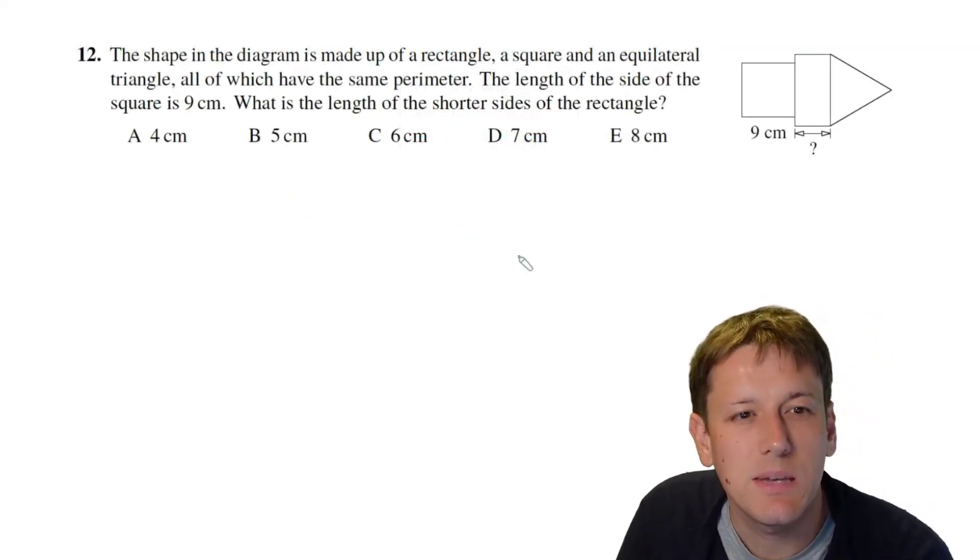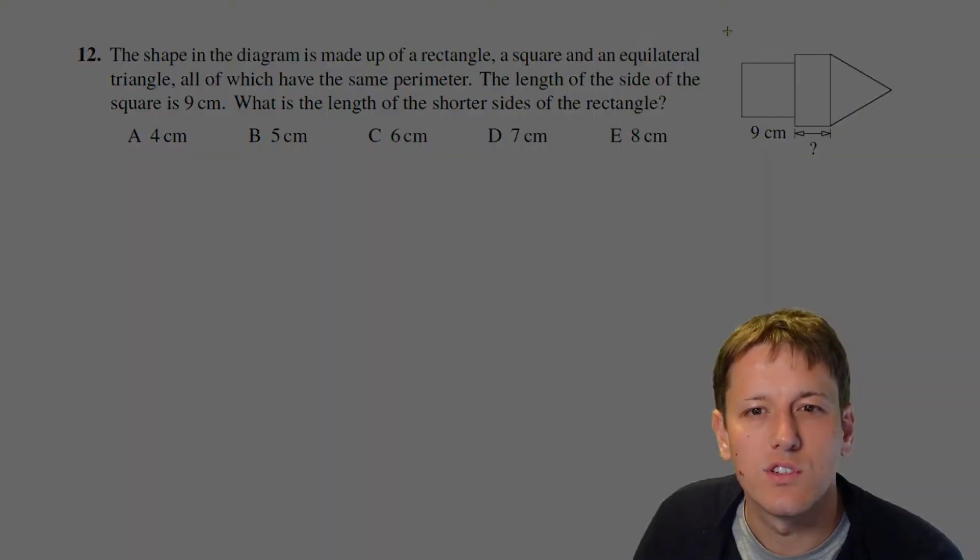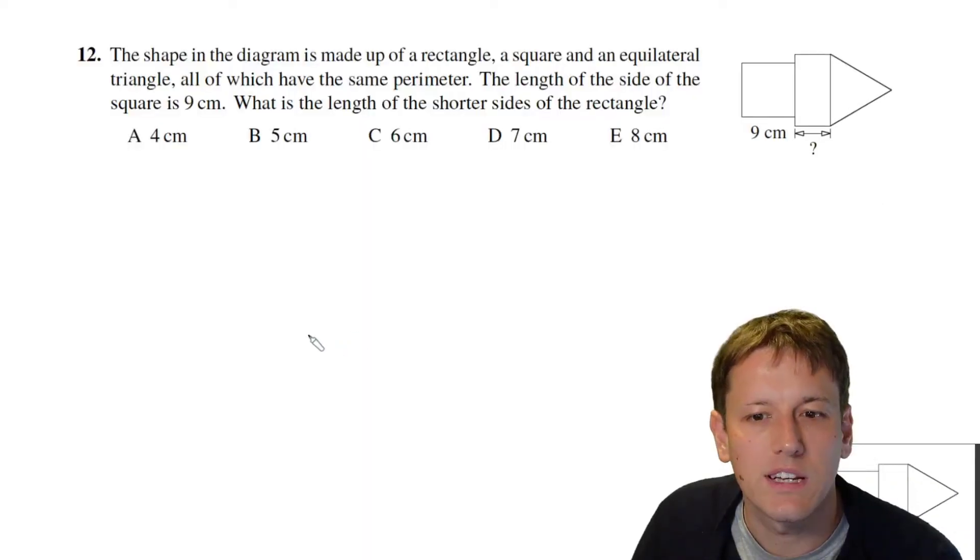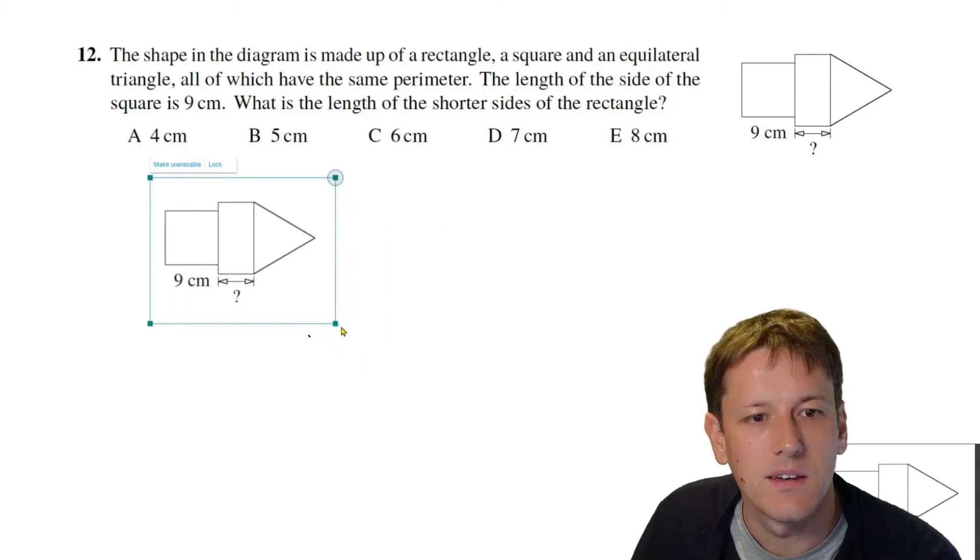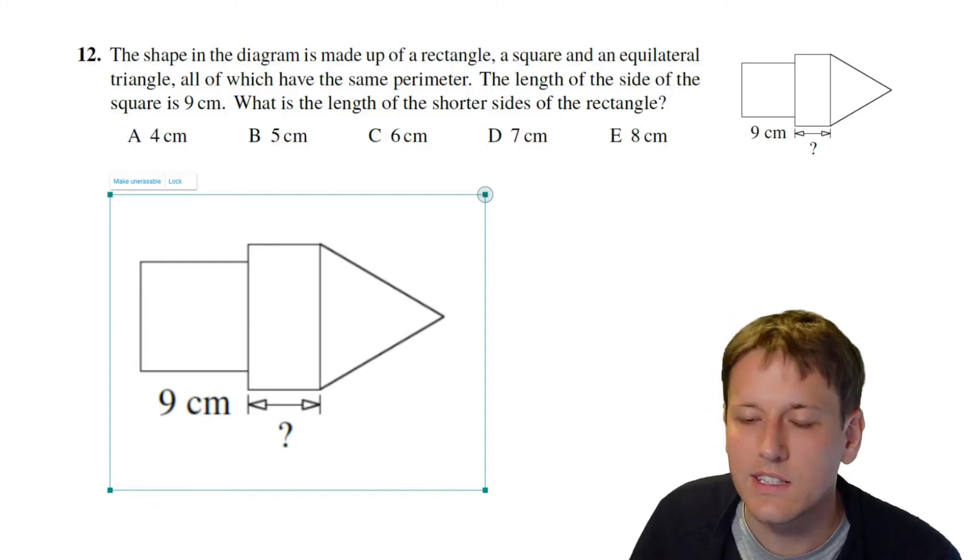Question 12 says the shape in the diagram is made up of a rectangle, a square and an equilateral triangle all of which have the same perimeter. The length of the side of the square is 9, what is the length of the shorter sides of the rectangle. So I'm just going to make a bigger copy of this picture so we can work on it easily here.